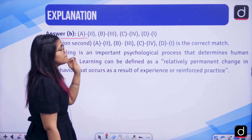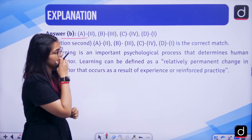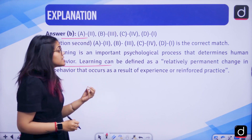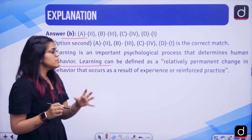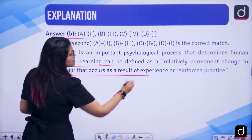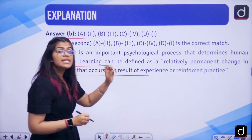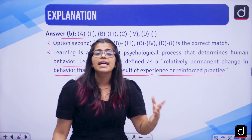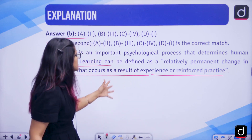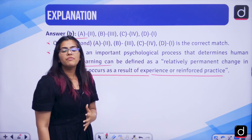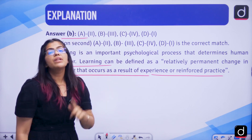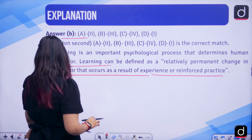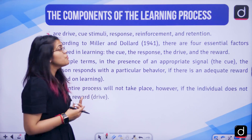Learning is a very important psychological process that determines human behavior. Learning can be defined as a relatively permanent change in behavior that occurs as the result of experience or reinforced practice. If you again and again practice something and experience is repeatedly provided, there will be a behavioral change — and learning is nothing but that behavioral change the teacher intends you to have.